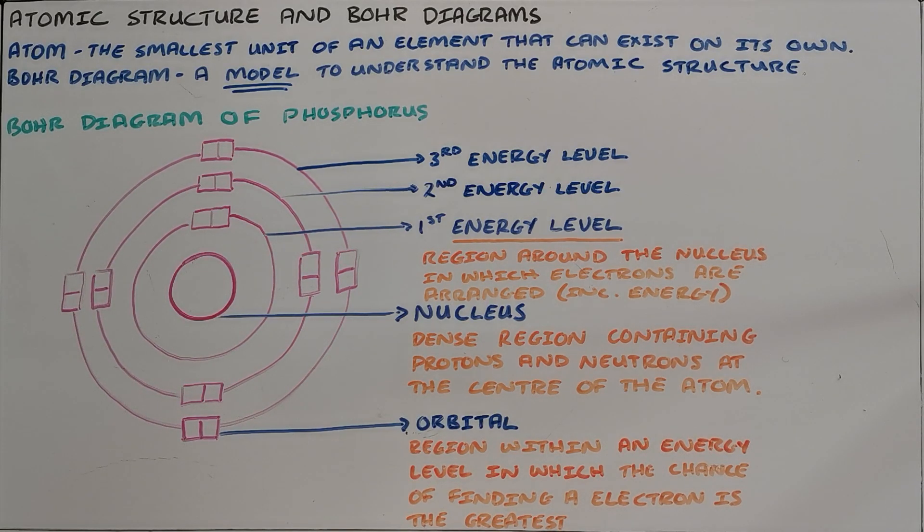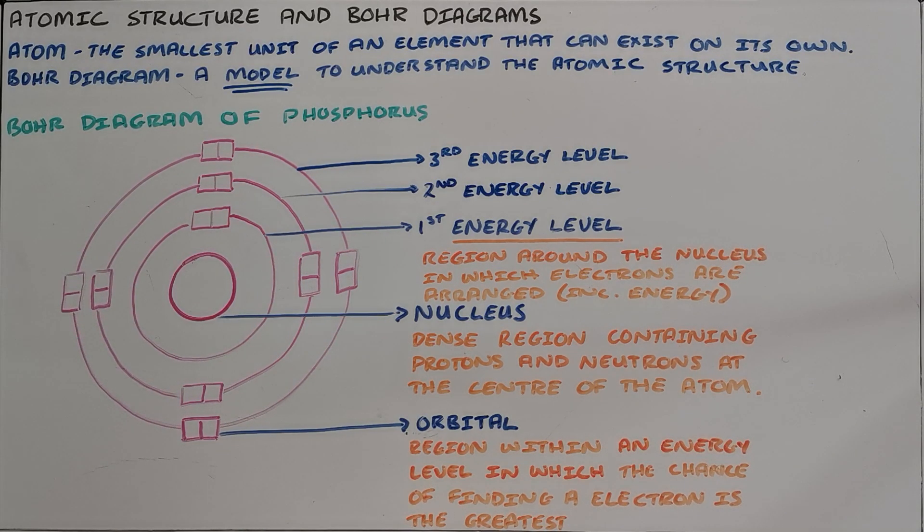The subatomic particles that atoms are made up of are called protons, which are positively charged, neutrons, which are neutral, and electrons, which are negatively charged.